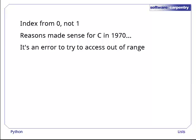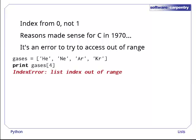Just as it's an error to try to get the value of a variable that hasn't been defined, it's an error to try to access a list element that doesn't exist. For example, if our list of noble gases has four elements, legal indices for the list are 0, 1, 2, and 3. So trying to access element 4 produces an error.